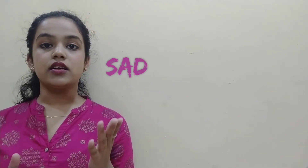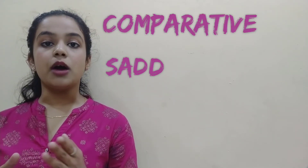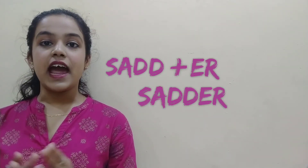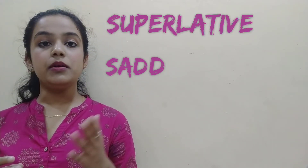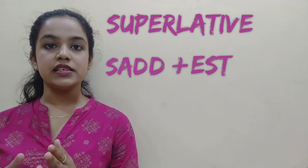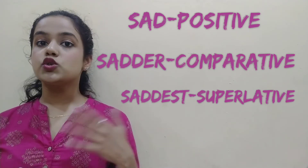Rule number four: if your adjective ends with a consonant preceded by a vowel, double the consonant. For example, the word 'sad' — D is a consonant and A is a vowel. To convert to comparative degree, double the consonant and add ER, giving 'sadder'. To convert to superlative degree, double the consonant and add EST, giving 'saddest'. So: 'sad' — positive, 'sadder' — comparative, 'saddest' — superlative.